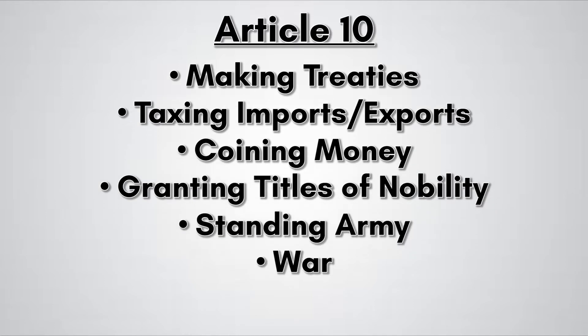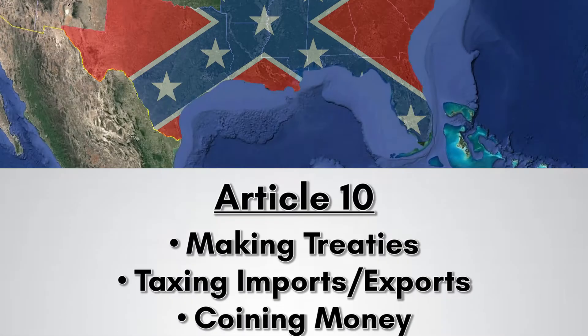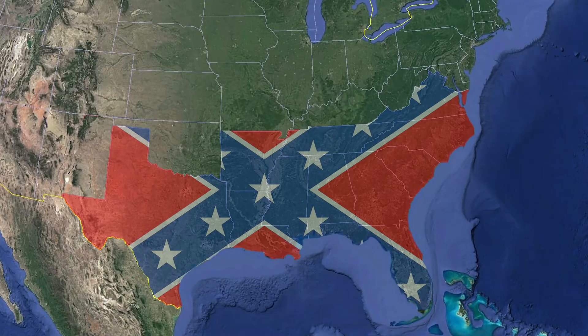You'd think that states can do anything not listed in this article, including secession. In fact, many politicians recognized this and attempted to pass an amendment. Before this could be done, 11 states in the southeast seceded and formed the Confederate States of America.